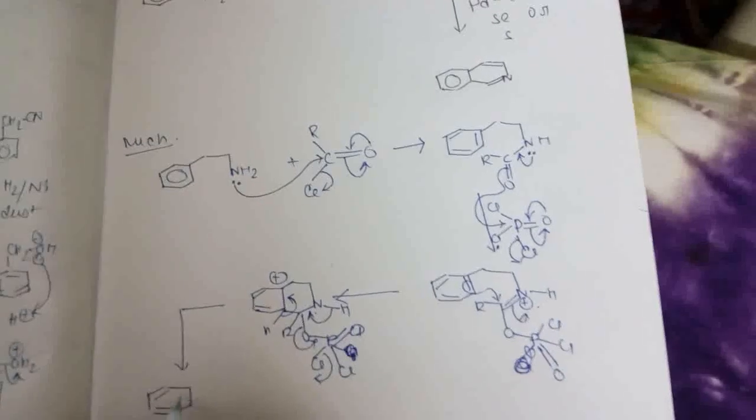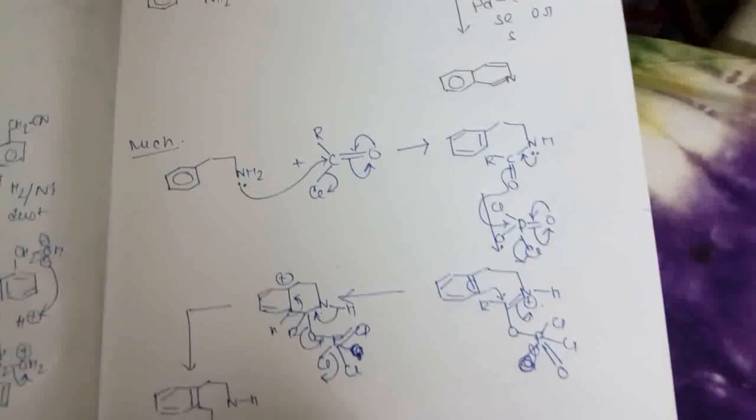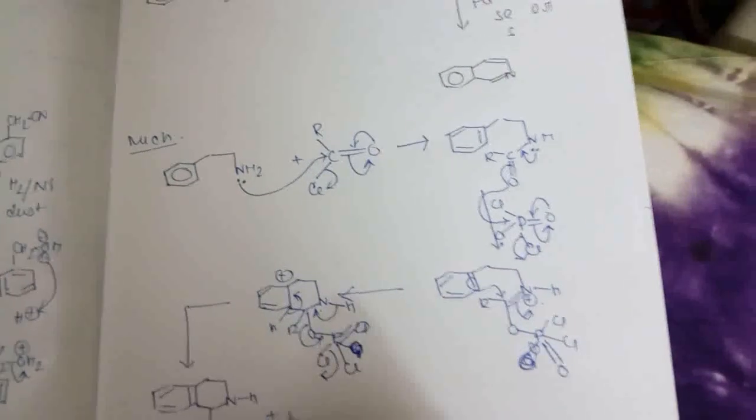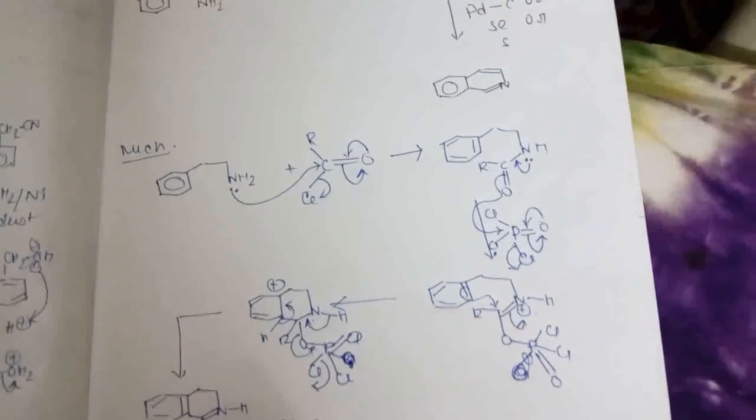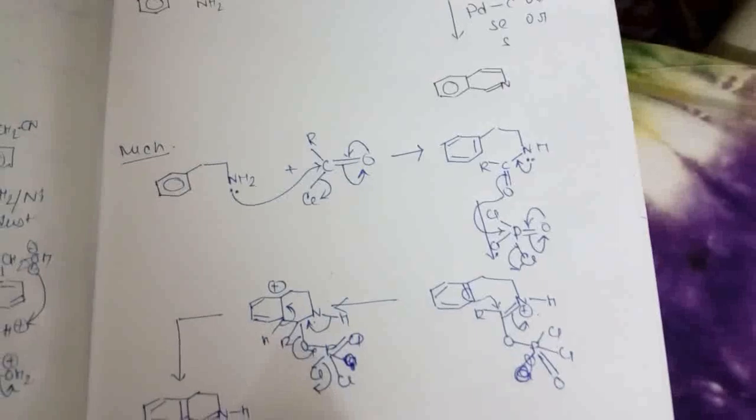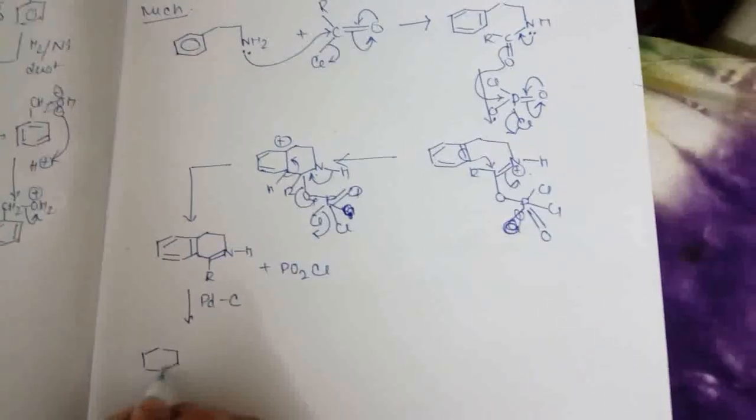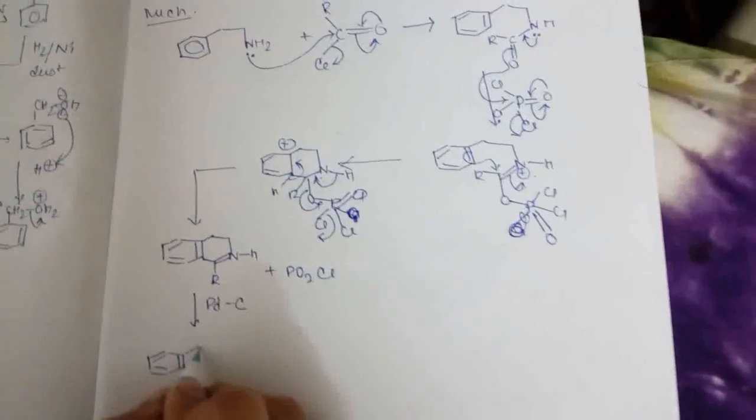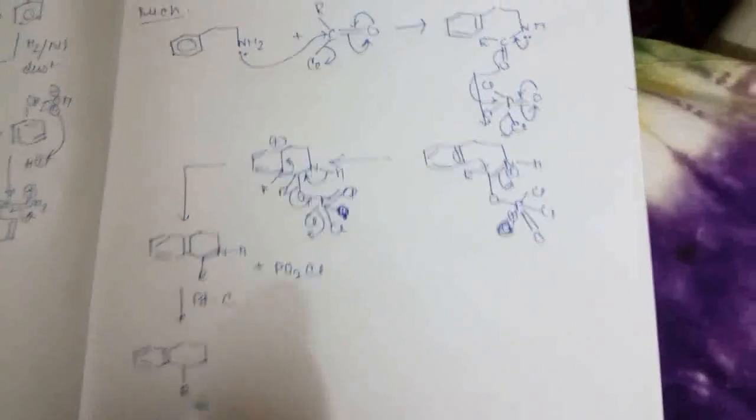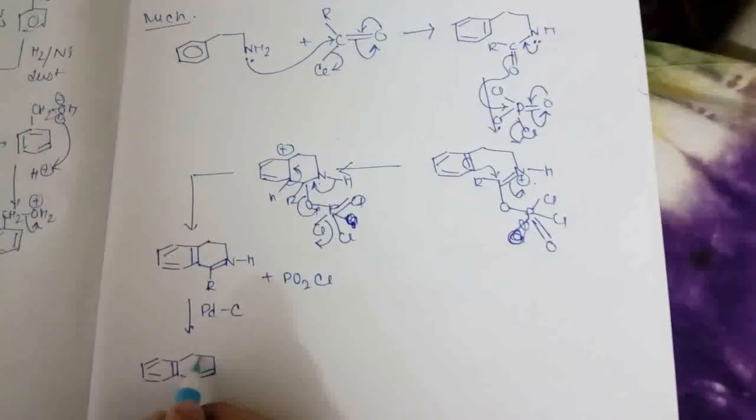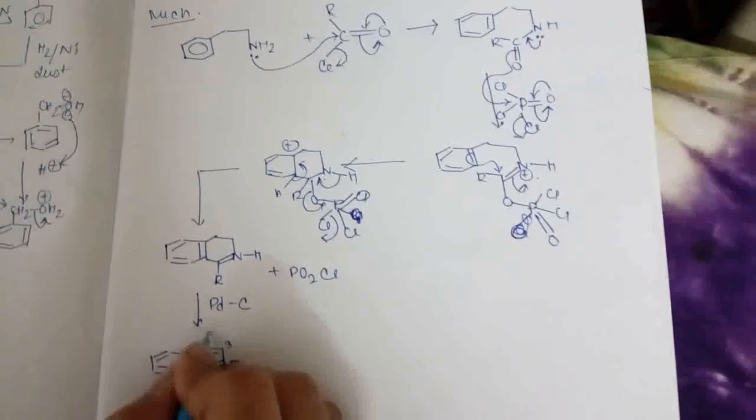So this will form, and then it is aromatized by palladium carbon, and isoquinoline forms with a substitution in one position. This alkyl group is substituted in position 1,2,3,4.